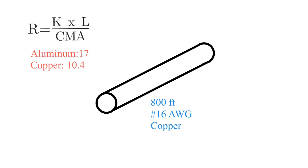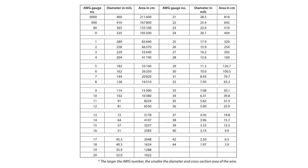So what we need to do for that is to go to our table. We go to our table here, and we see we've got our gauge number here. We go all the way down until 16. We move across here until we get to the area in circular mils. And it ends up being 2,583.